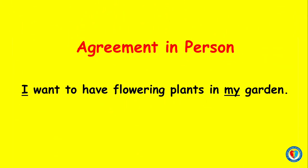Agreement in person. Example: 'I want to have flowering plants in my garden.' The pronoun in the sentence is my, and the antecedent is I.